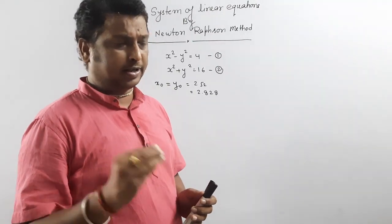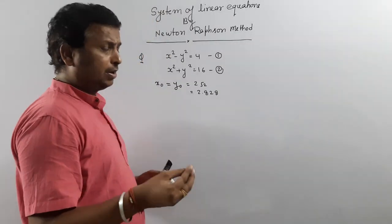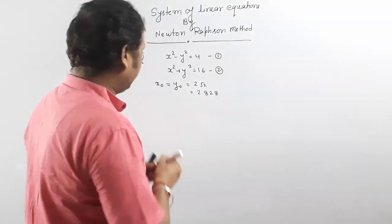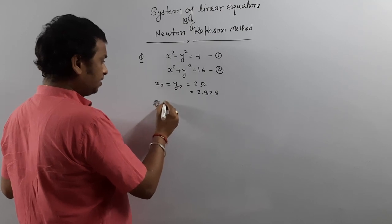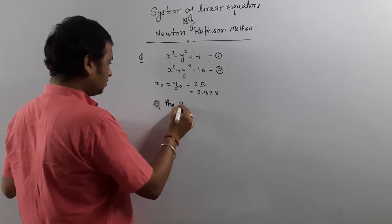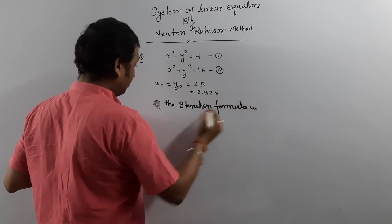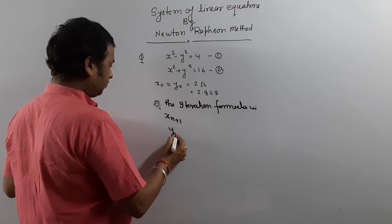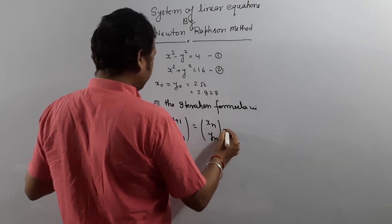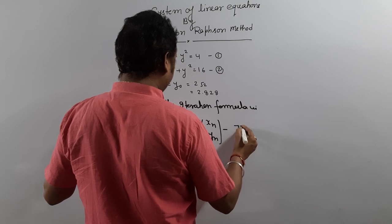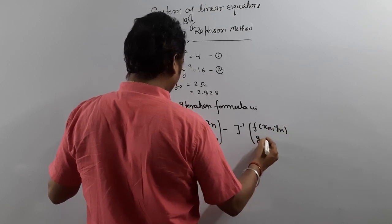This is actually the easiest topic, and the procedure is very easy. You just have to recall one formula. The iteration formula is: the matrix [x(n+1), y(n+1)] is equal to [xn, yn] minus J inverse evaluated at (xn, yn), multiplied by [f(xn, yn), g(xn, yn)].